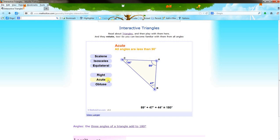An acute triangle means that all angles are less than 90 degrees.